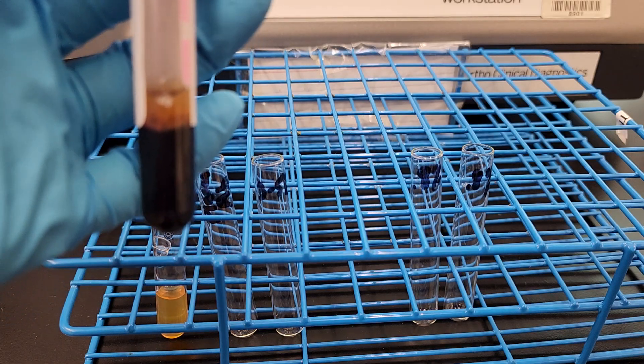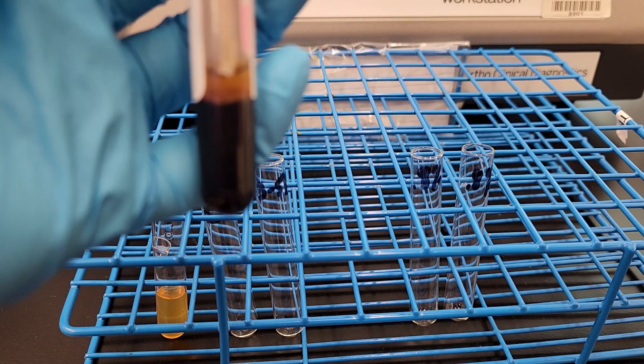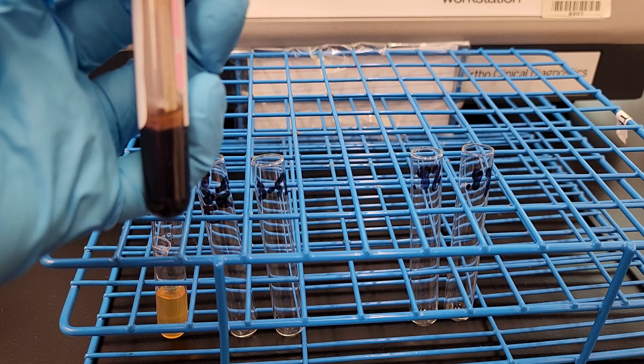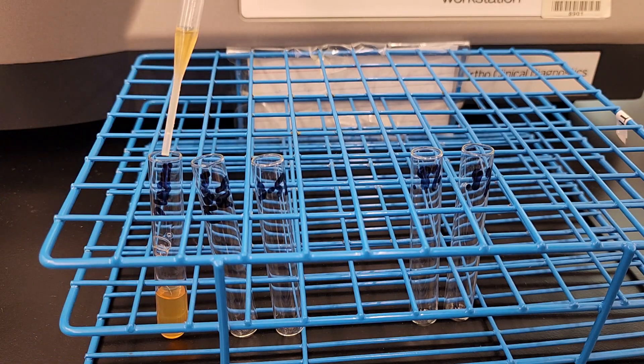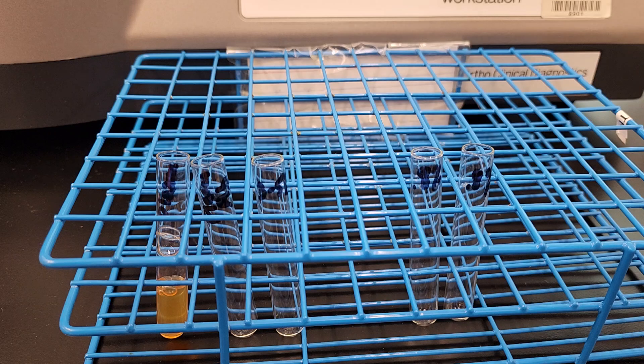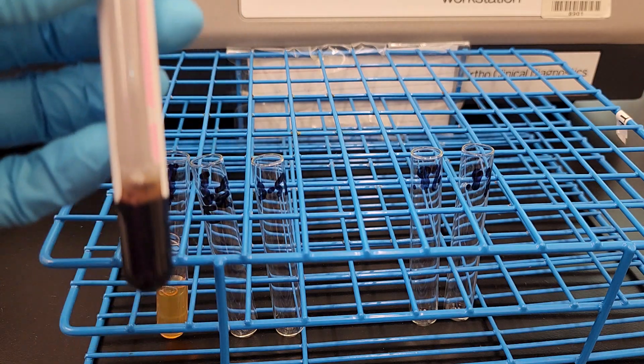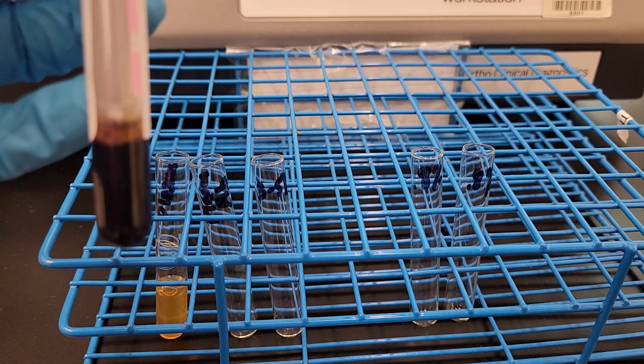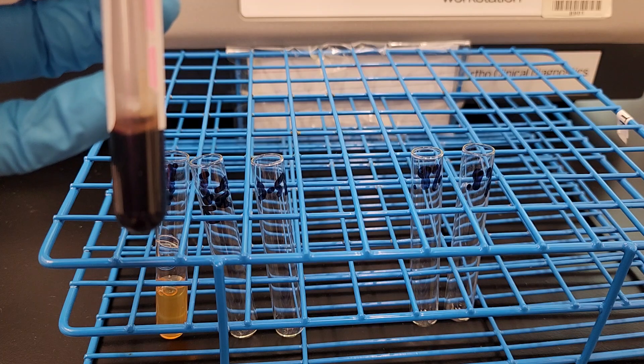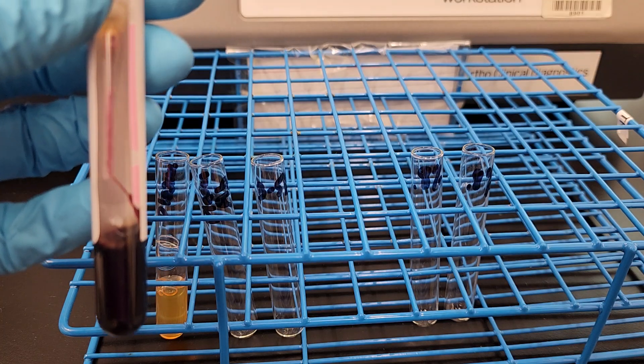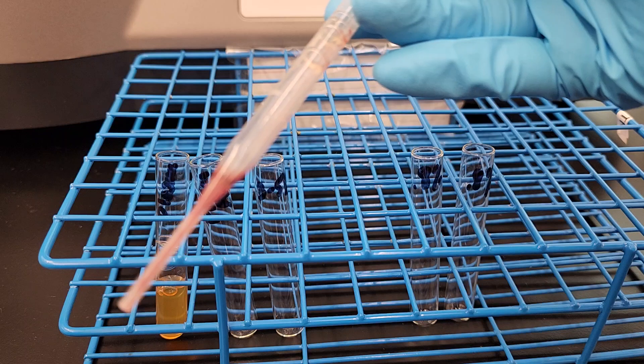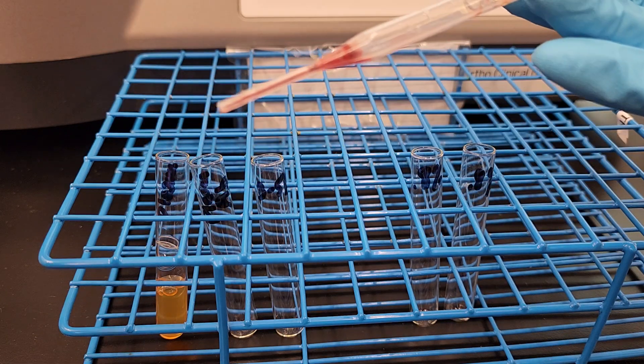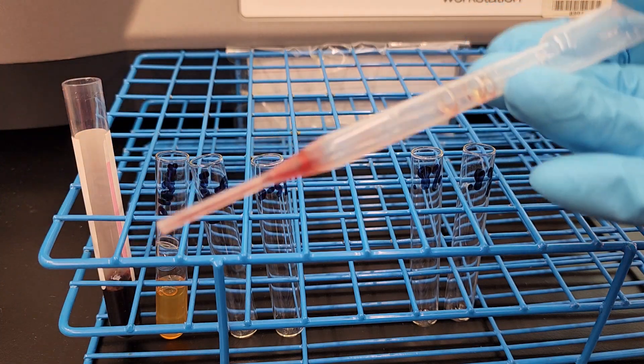So this is where everybody gets pretty much messed up when you get closer to that buffy coat. So I still have my plasma, but see we have a little bit, the camera's not really picking up, but also a little bit of liquid right above the cells. So if I wanted to pull that up, I might pull up some red cells. And that's what ends up happening with students. And then they put it right in the plasma and then it's messed up and you have to mitigate from that.